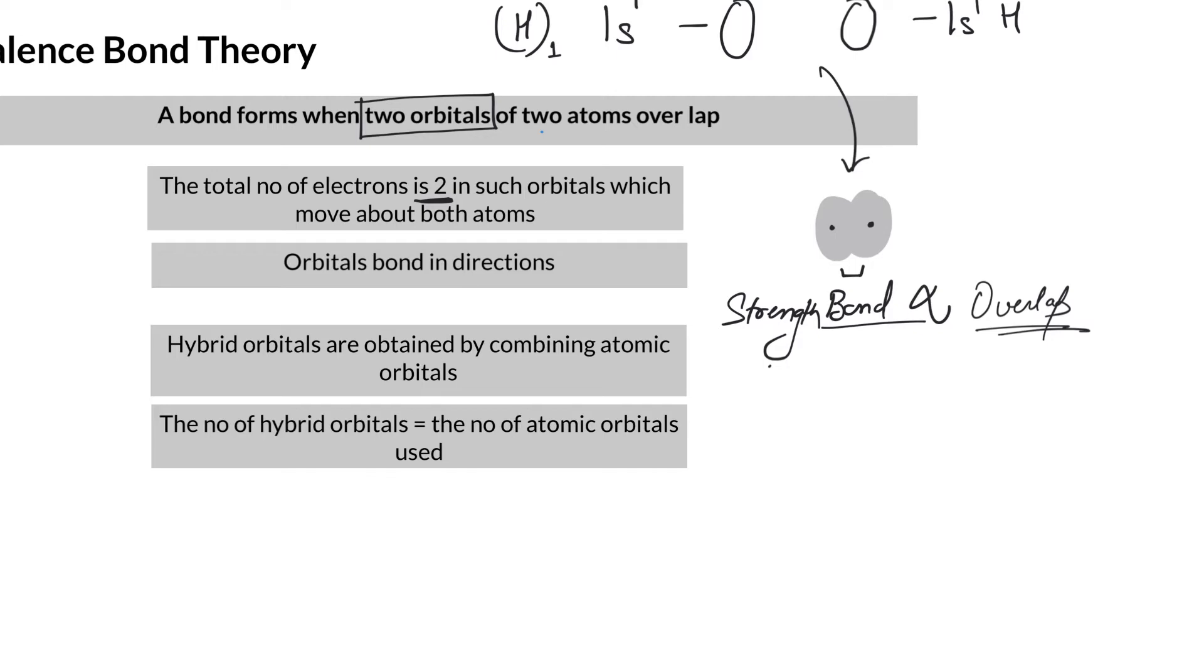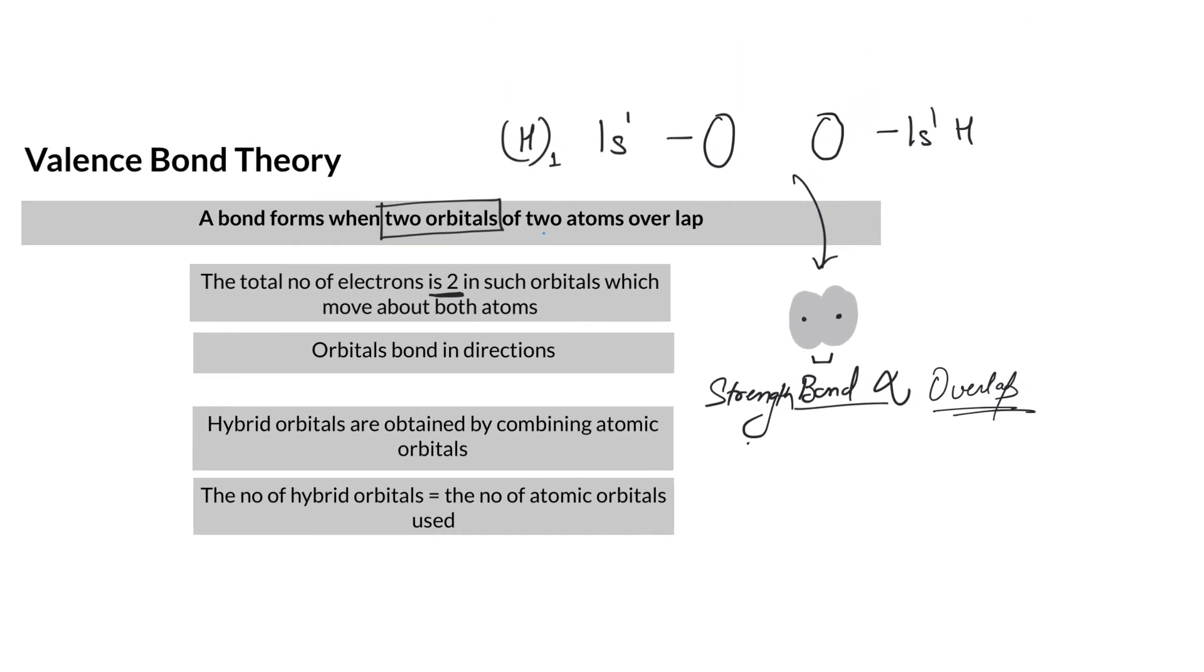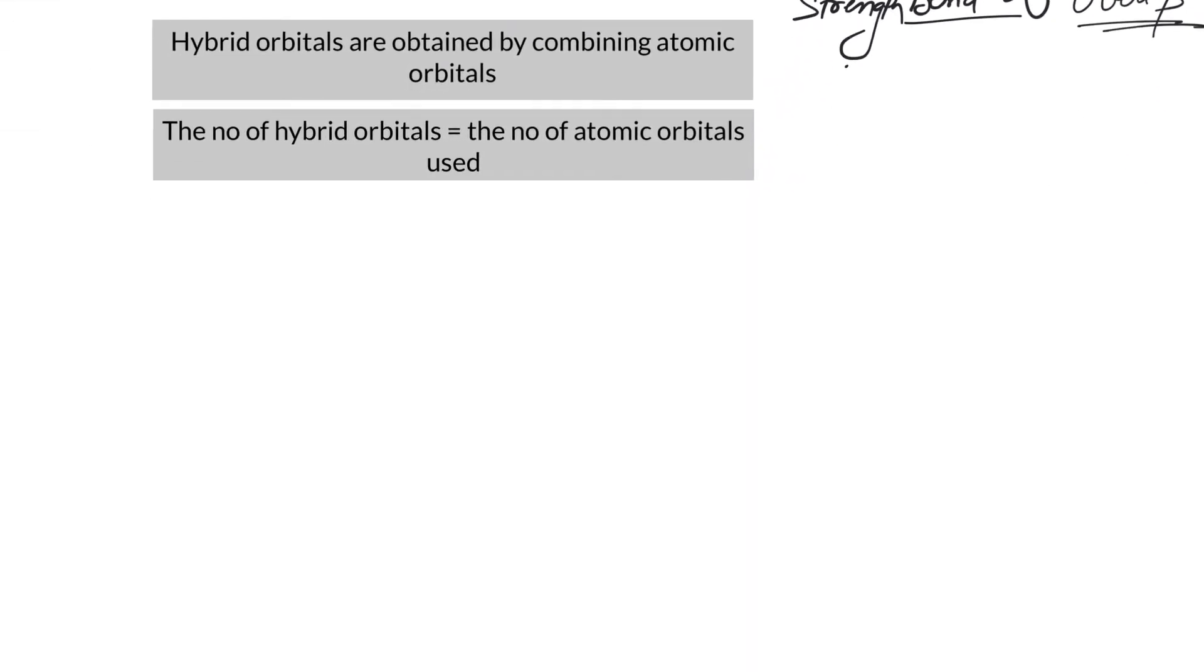For hydrogen, it's pretty simple. Now let's talk about a molecule such as CH₄. We talk about the central atom, carbon. The atomic number is 6: 1s² 2s² 2p².